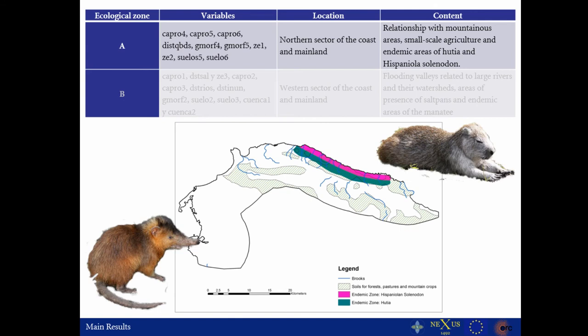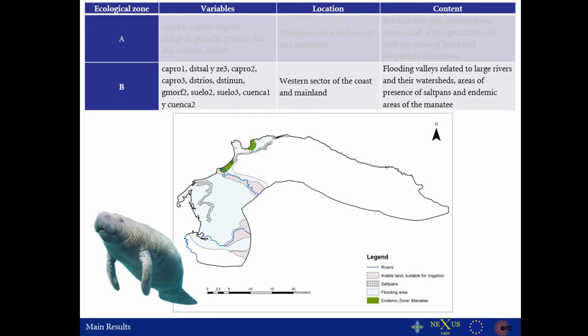Ecological zone number one is located on the northern part of this region and is related to mountainous areas, small-scale agriculture, and endemic areas of the hutia and the Hispaniolan solenodon, which were the only mammals present back in 1492. The second zone is connected to flooding valleys related to large rivers and watersheds, areas of residual soil plants, and endemic areas of the manatee — which is almost extinct, so please don't eat it.